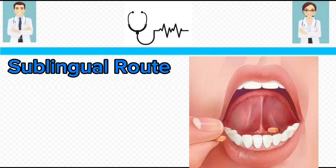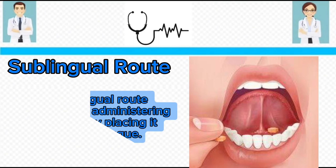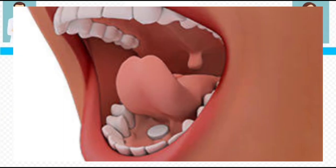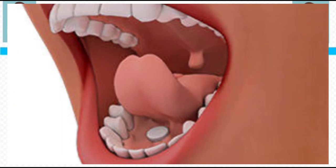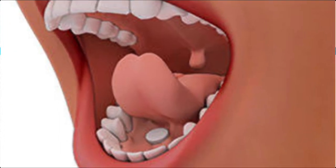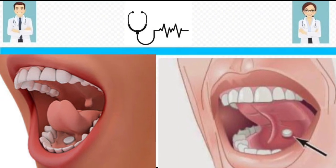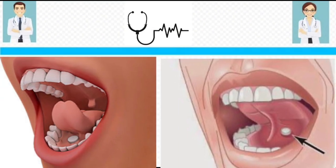First, let us see what the sublingual route is. The sublingual route is the route of drug administration in which we place the drug directly under the tongue. As you can see in the picture, the drug is absorbed directly into the blood through the rich network of blood vessels which is present under the tongue.